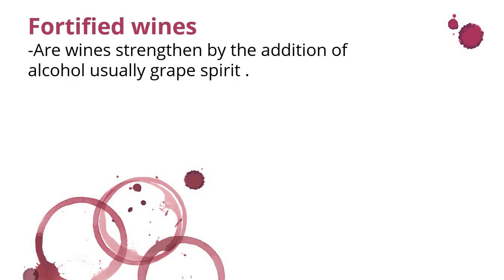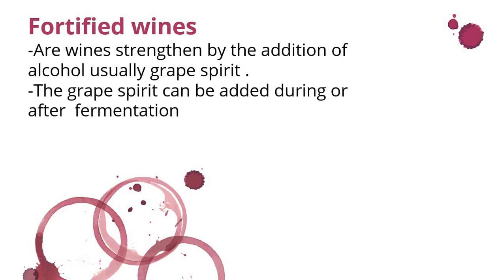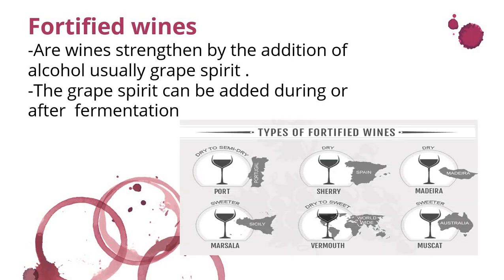Next are fortified wines. Fortified wines are wines strengthened by the addition of alcohol — usually grape spirit. The grape spirit can be added during or after fermentation. Examples of fortified wines include sherry, port, Madeira, Marsala, vermouth, and Muscat. You can see where they are made in the infographic.